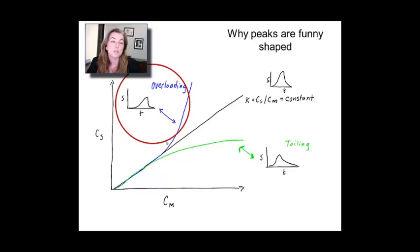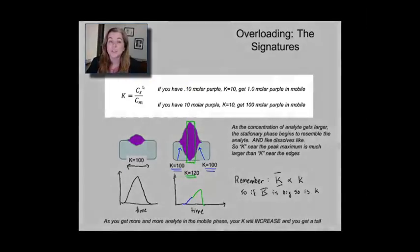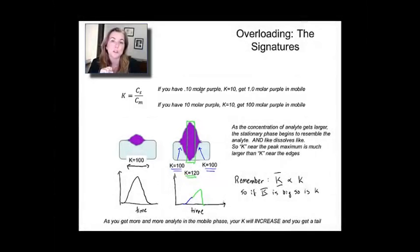So, let's talk a little bit about the overload issue. So, in overloading, what's happening is k is not actually staying constant. So, we would expect, if you went from 0.10 molar to 10 molar, that you would still have this relationship holding.